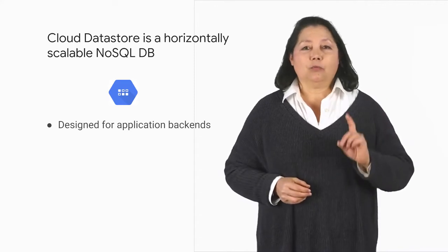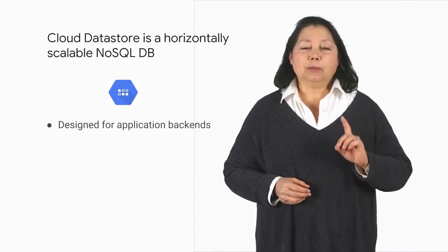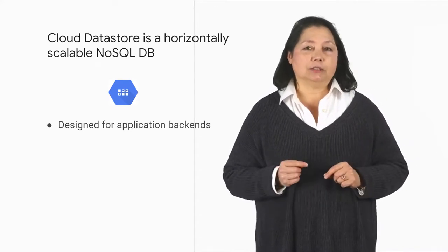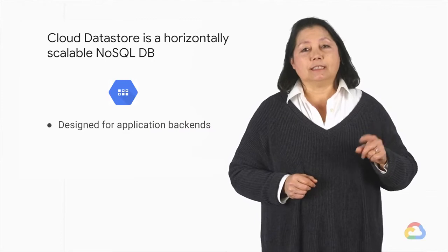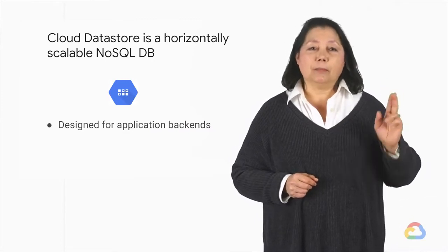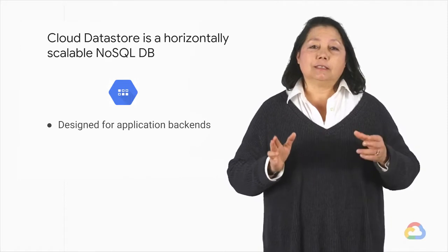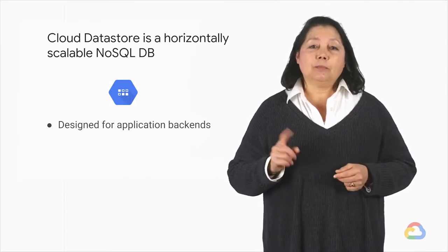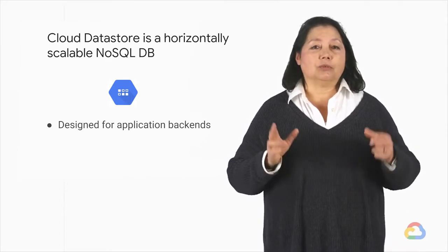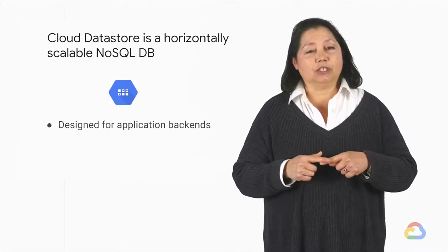We already discussed one GCP NoSQL database service, Cloud Bigtable. Another highly scalable NoSQL database choice for your applications is Cloud Datastore. One of its main use cases is to store structured data from App Engine apps. You can also build solutions that span App Engine and Compute Engine with Cloud Datastore as the integration point.